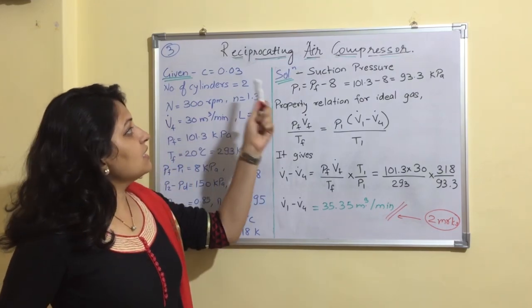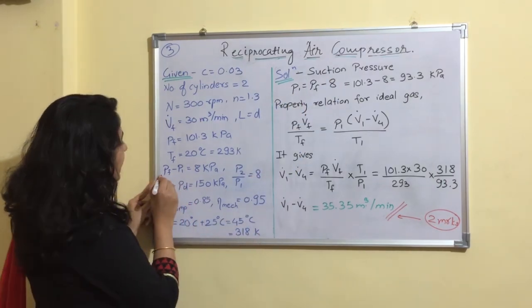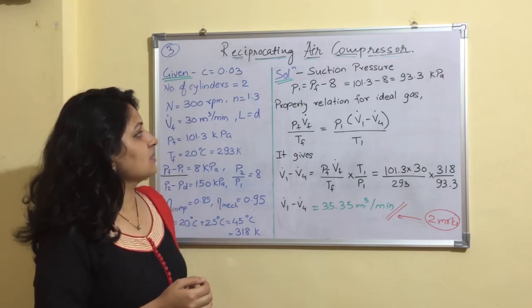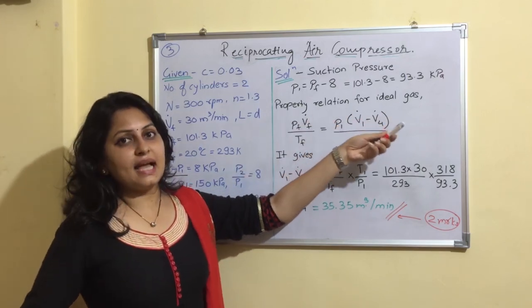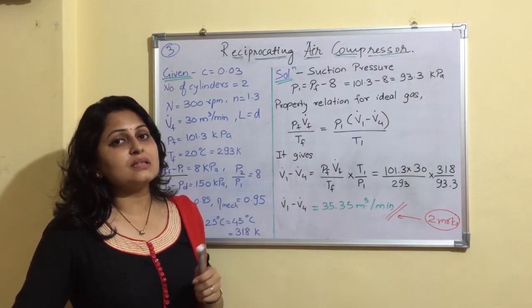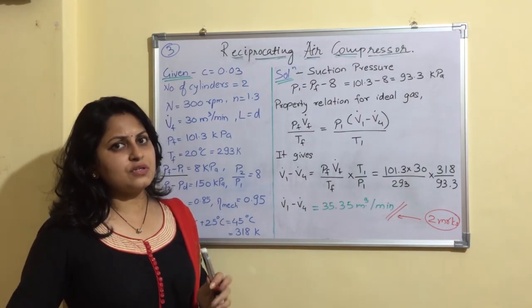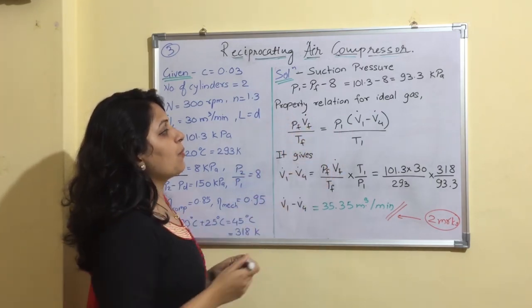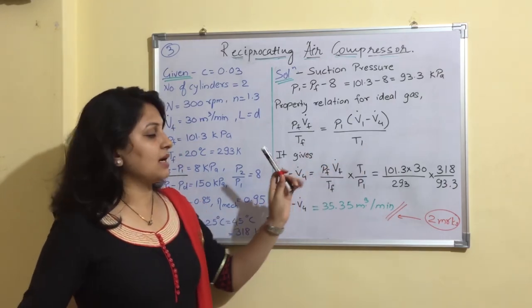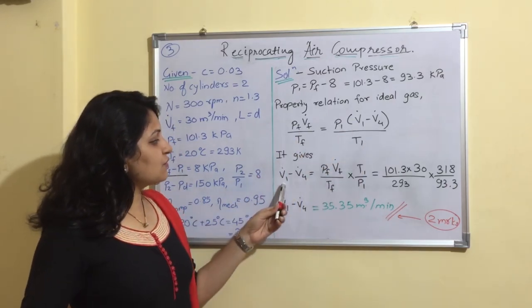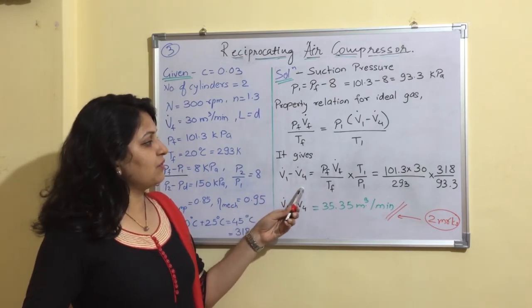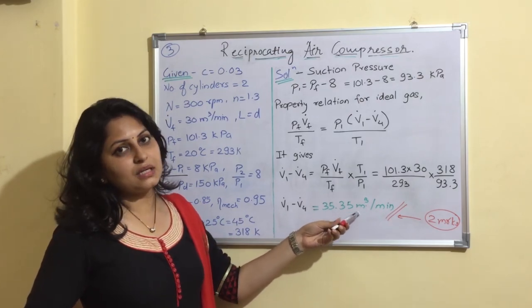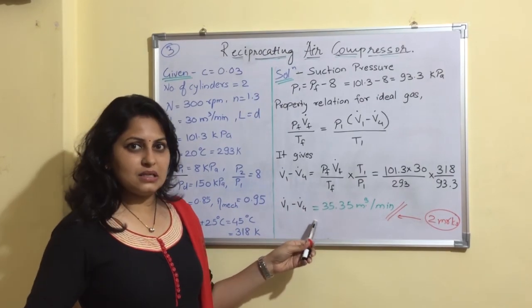First, we find suction pressure using the inlet pressure loss: P1 = 101.3 − 8 = 93.3 kPa. Then, from the ideal gas relation PV = mRT with m and R constant, we use (P_F · V_F)/T_F = (P1 · V1)/T1 to find (V1 − V4). Substituting all values, we get (V1 − V4) = 35.5 m³/min.